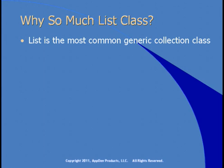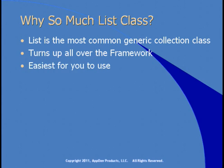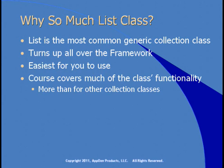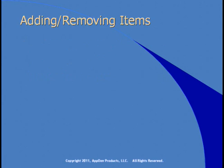The List class is the most common generic collection class — it turns up all over the framework and is the easiest to use. The course covers about 97% of the class's functionality. Most other collection classes copy behavior from List, and List is the one you're most likely to use, so we'll spend more time on it than the others.